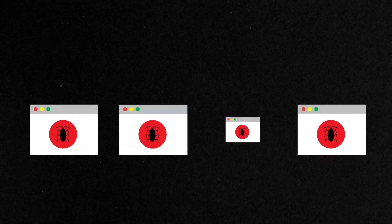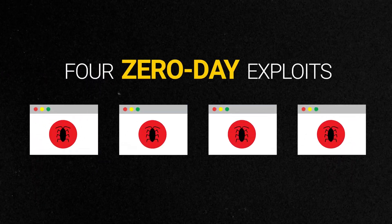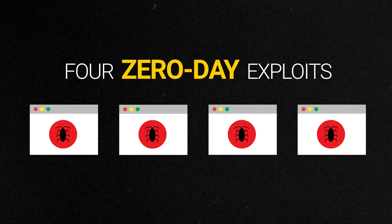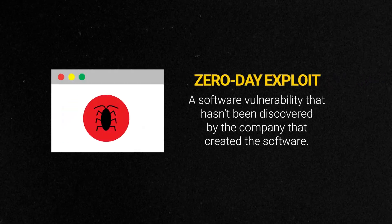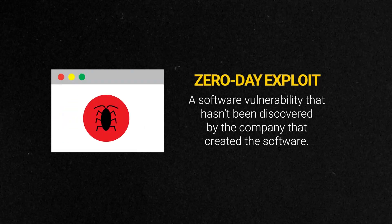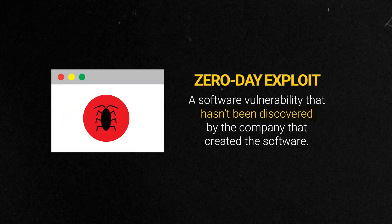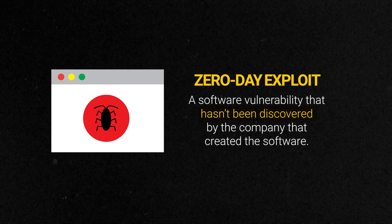So Stuxnet was sophisticated, strategic, and thoughtfully designed. In fact, it contained four zero-day exploits. A zero-day exploit is a software vulnerability that hasn't been discovered by the company who created the software. A company can't fix a problem if they don't know it exists, so these vulnerabilities can't be patched.